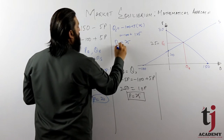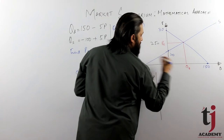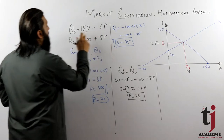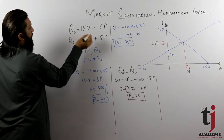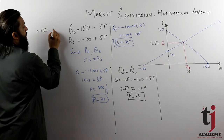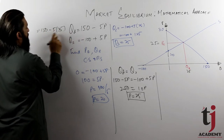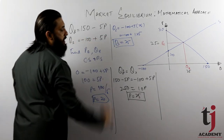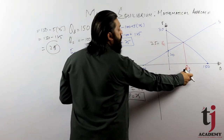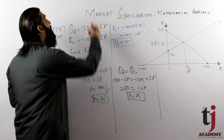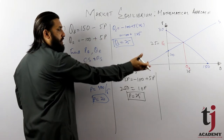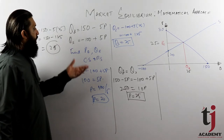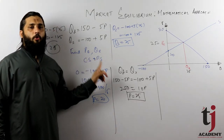यह आपके पास बचेगा 25 — इत्तिफाक है कि यह same value आ गई। Quantity आपके पास आ गई 25। Supply से 25 आई। अगर demand से निकालें: 150 minus 5 times 25 equals 150 minus 125 equals 25 — दोनों से answer same आ रहा है। Equilibrium price 25, equilibrium quantity 25।